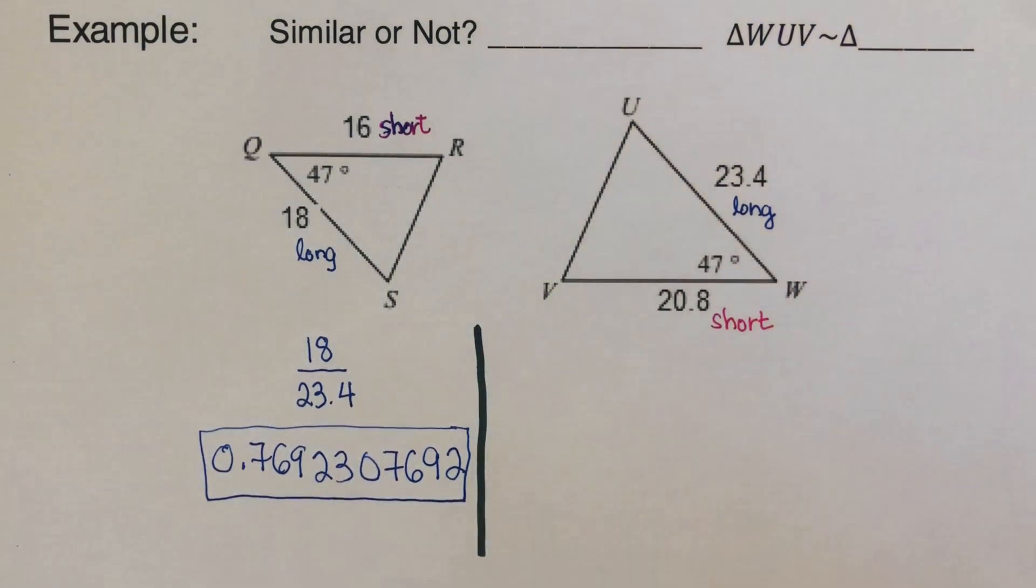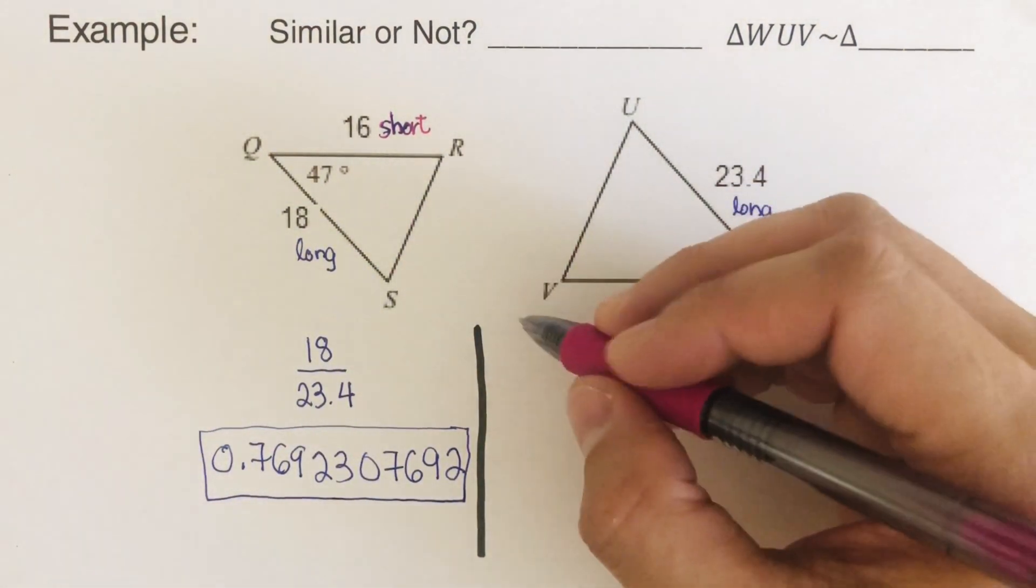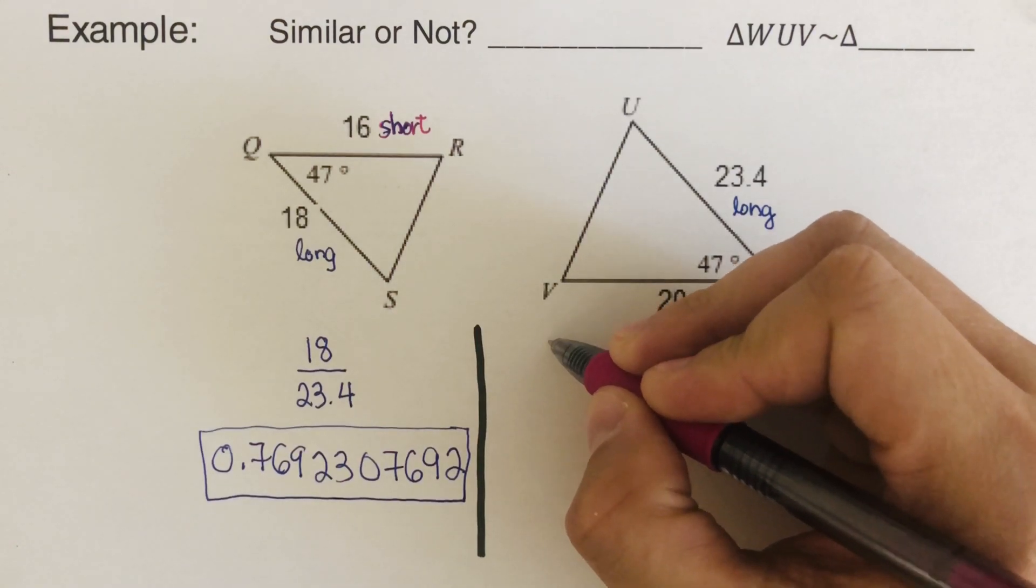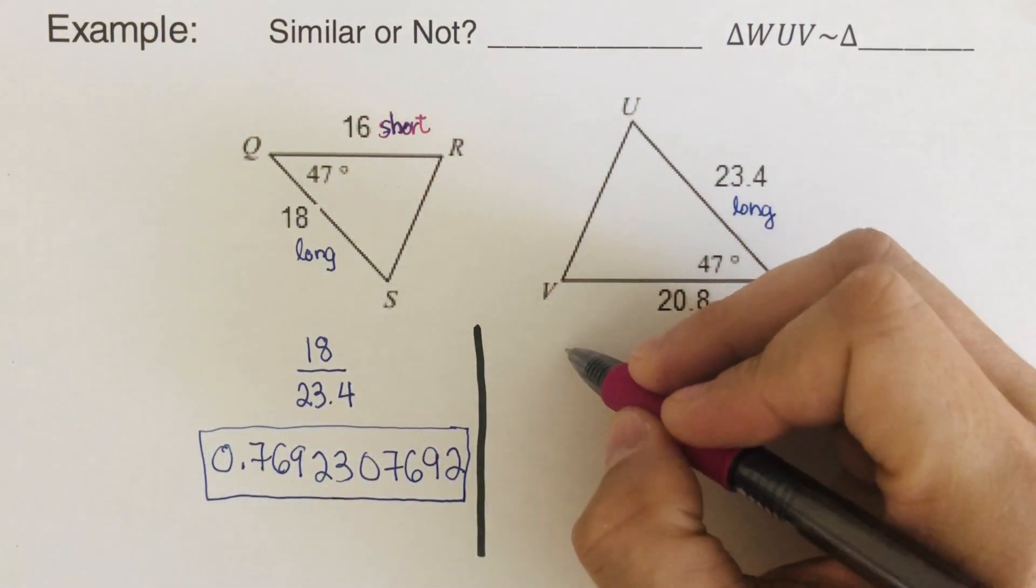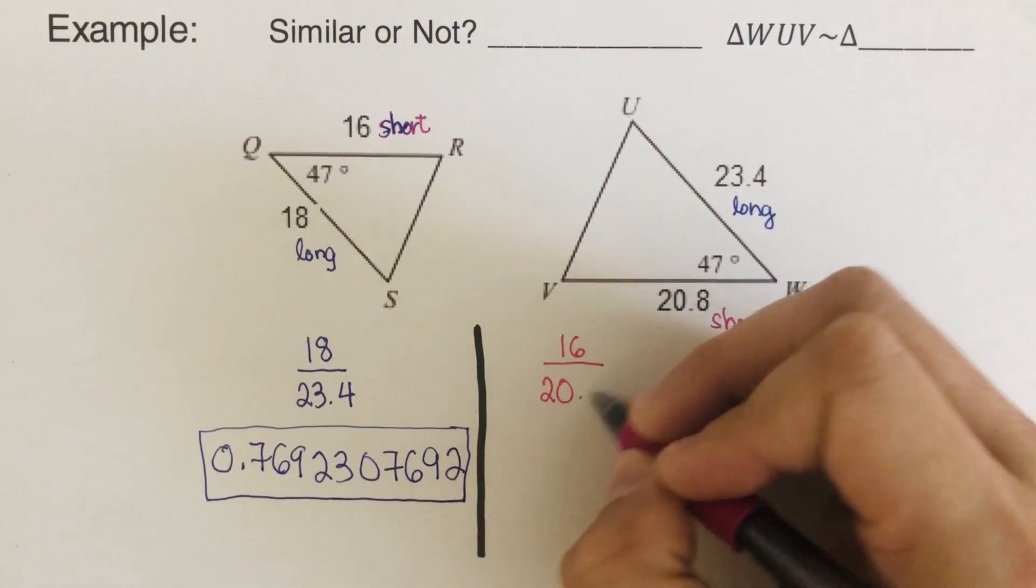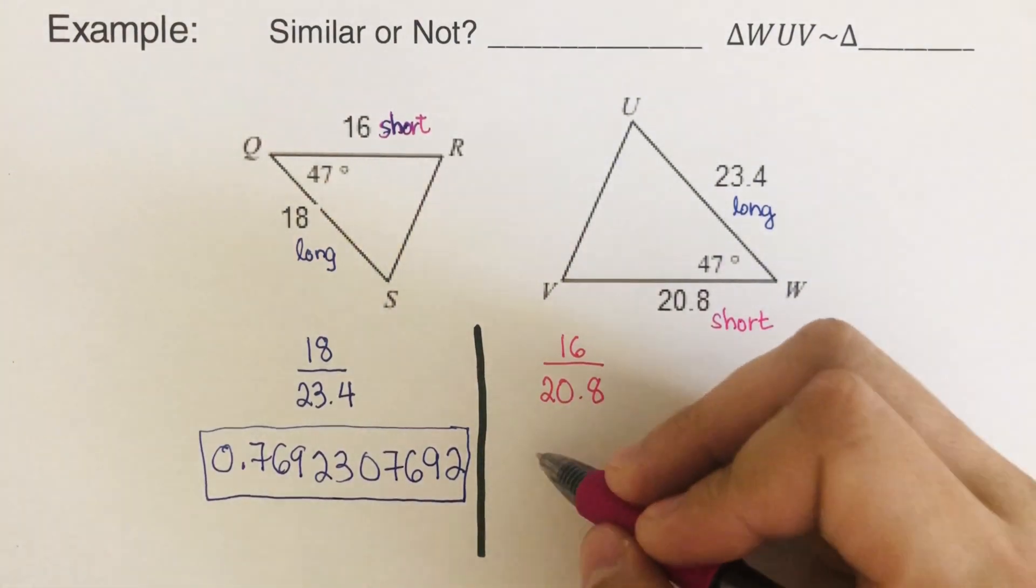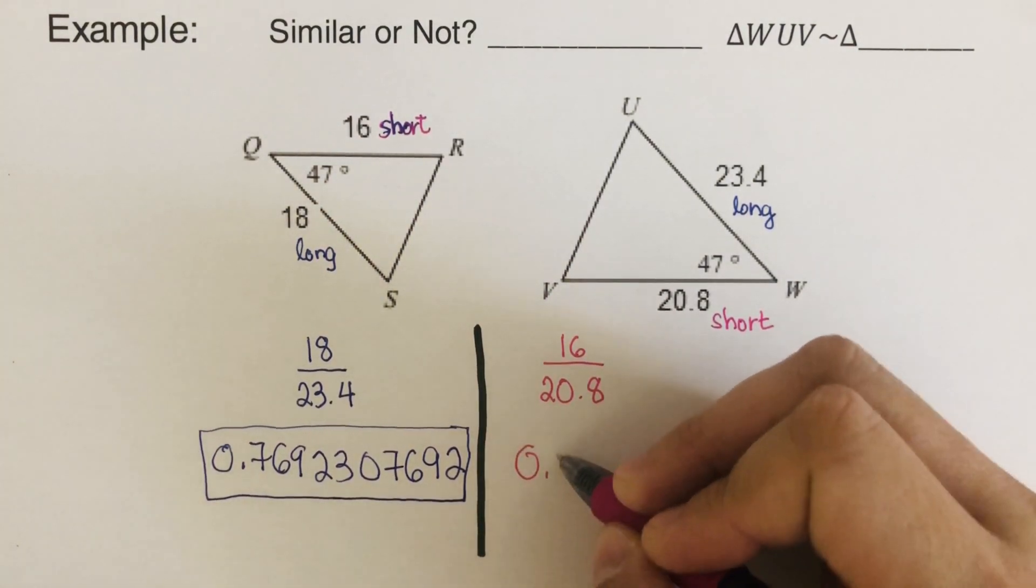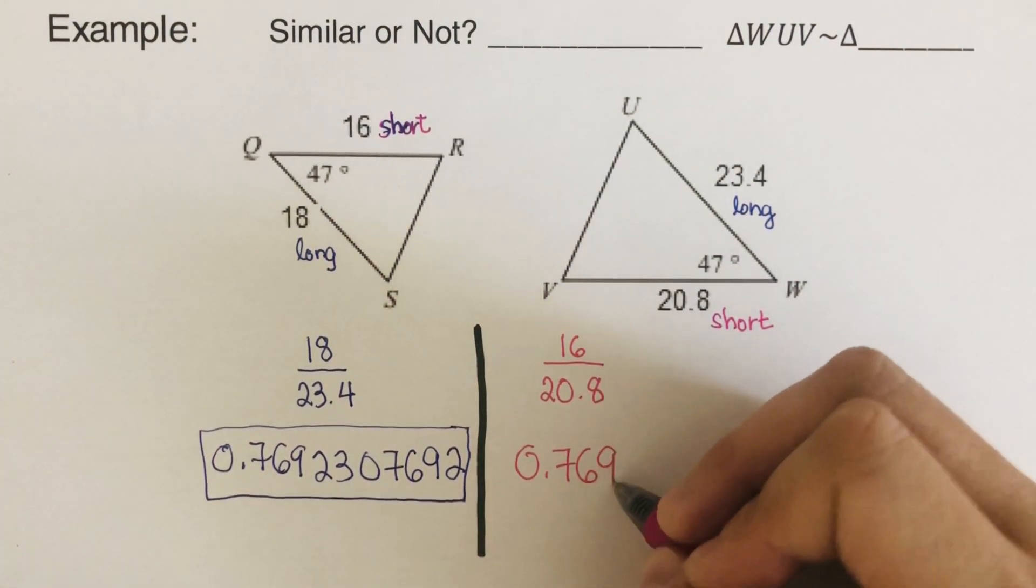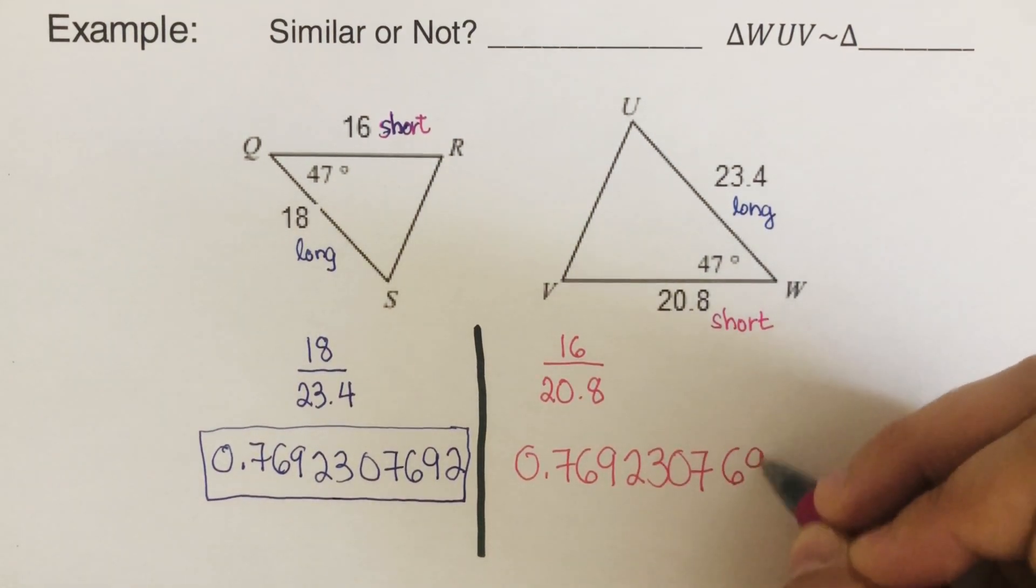Now let's pair up the short ones. We got a 16 and 20.8. So I go ahead and say, again, short and short, first and second. So that's 16 divided by 20.8. So we use calculator for this. And the value for this is 0.7692307692.